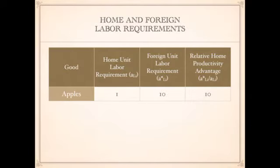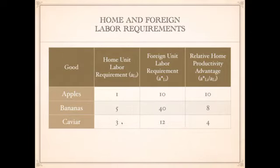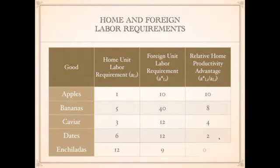For apples, the unit labor requirement in the home country is 1, while in the foreign country it's 10, meaning home workers are 10 times more productive for apple production. For bananas, the home unit labor requirement is 5 and the foreign is 40, so home workers are 8 times more productive. For caviar, the home unit labor requirement is 3 and the foreign is 12, making home workers 4 times more productive. We then fill in the same information for dates and enchiladas.